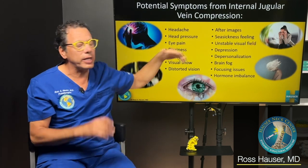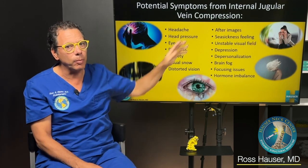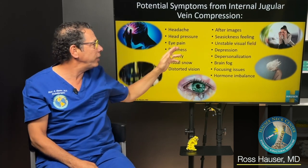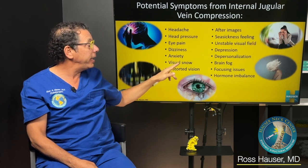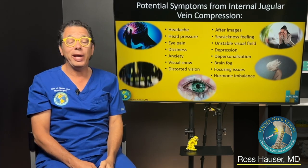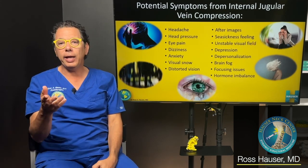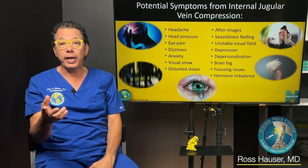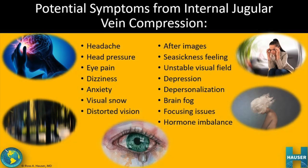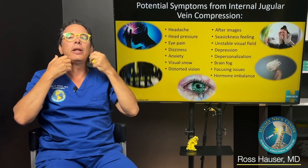Potential symptoms from internal jugular vein compression include lots of different afterimages, unstable visual field, seasickness feeling, dizziness, anxiety, visual snow, distorted vision, focusing problems, and brain fog. So anyone who has migraines with or without aura and has many of these symptoms — those are potentially from internal jugular vein compression. The internal jugular vein basically takes blood from the head to the heart. Various kinds of neck injuries can cause the neck vertebrae and curve to change, eventually causing jugular vein compression.